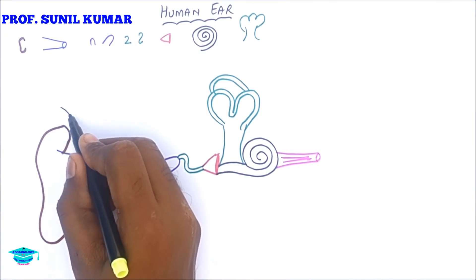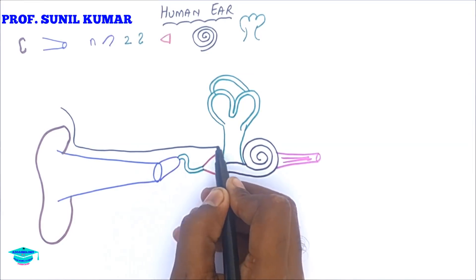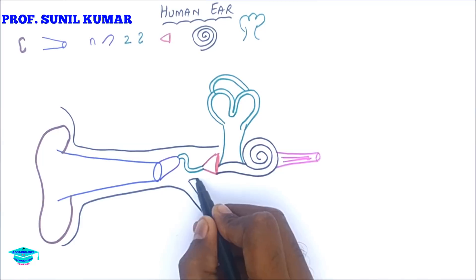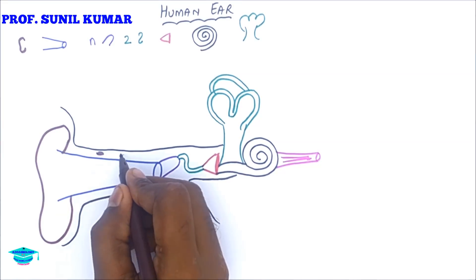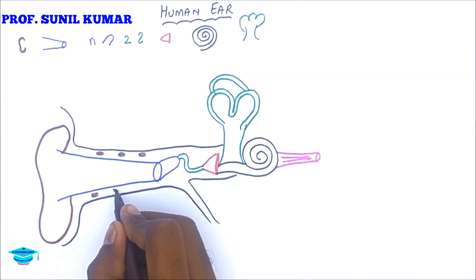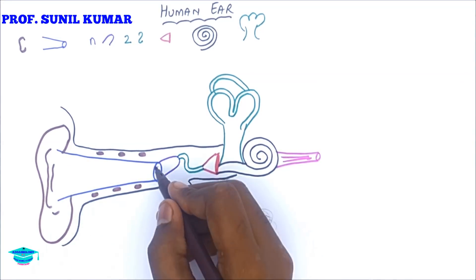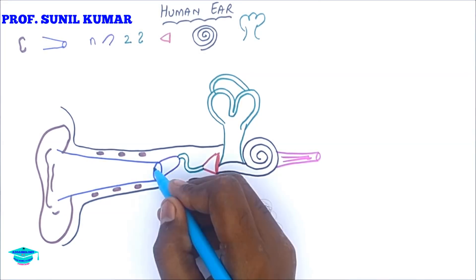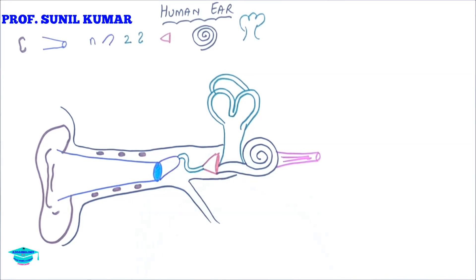This is the auditory nerve, which connects to the temporal lobe of the brain. Provide a covering on the ear, and there will be one more covering from the tongue which forms the eustachian tube. In the ear you will find glands called ceruminous glands. There is also a bit of curve in the ear that we normally see in the pinna.